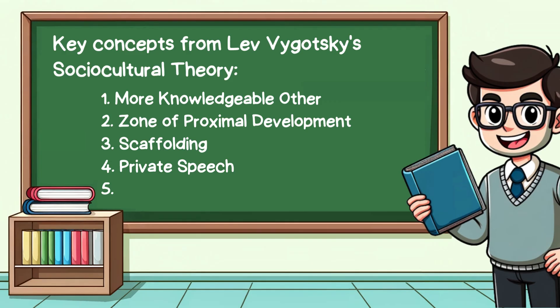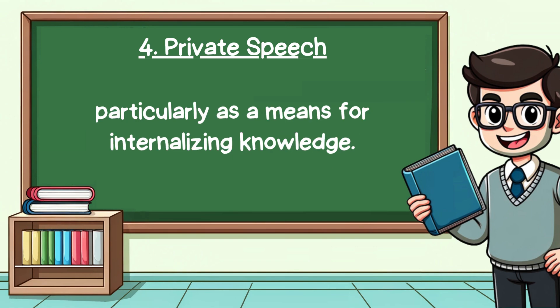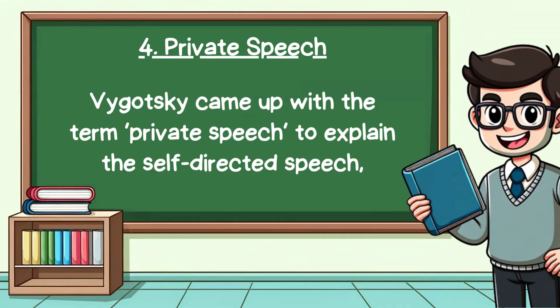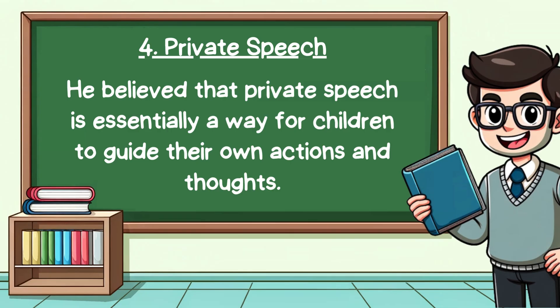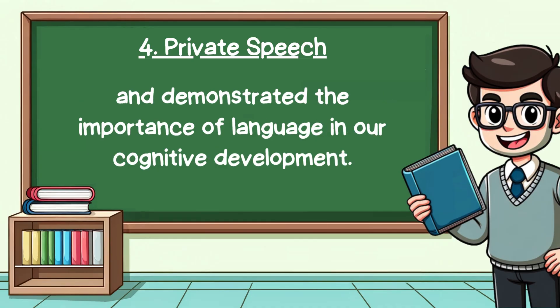Our fourth concept is the role of language and private speech in learning. Vygotsky viewed language as a critical tool for cognitive development, particularly as a means for internalizing knowledge. Language helps in thought processes and problem solving. Vygotsky coined the term private speech to explain the self-directed speech where a child talks to themselves, which typically emerges around the ages of two to seven years. He believed that private speech is essentially a way for children to guide their own actions and thoughts, and argued it was an important aspect of cognitive development.